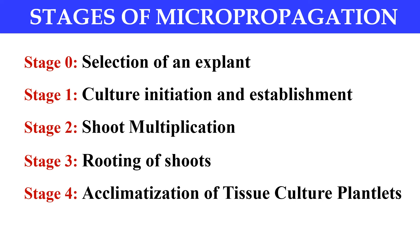The next stage is acclimatization of tissue culture plantlets. This stage prepares the plant to survive field conditions. When we prepare our tissue culture plantlets to survive under the outer field conditions, this is known as acclimatization. In this stage, we just allow the plantlets to grow by giving them field conditions, so that they become habitual to the field conditions slowly. And once they are transferred to the field, they can survive the harsh conditions of outside fields as well. This stage is very much crucial.